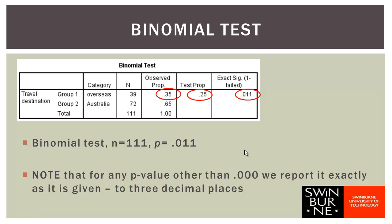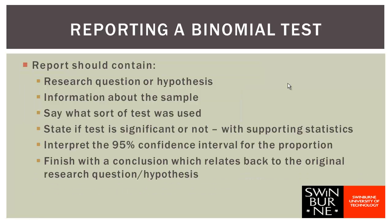So how would we go about writing a report on the binomial test? The report has exactly the same structure as the report for the one-sample t-test. You should start with a research question or hypothesis, give some information about the sample, say what sort of test was used, state if the test is significant or not with the supporting statistics, interpret the 95% confidence interval for the proportion, and finish with a conclusion that relates back to the original research question or hypothesis.